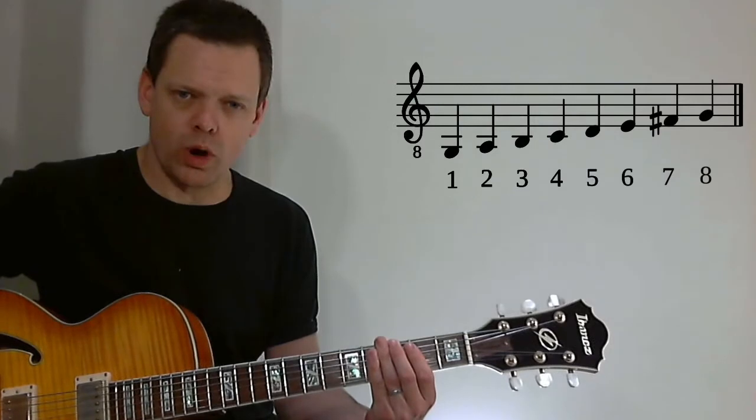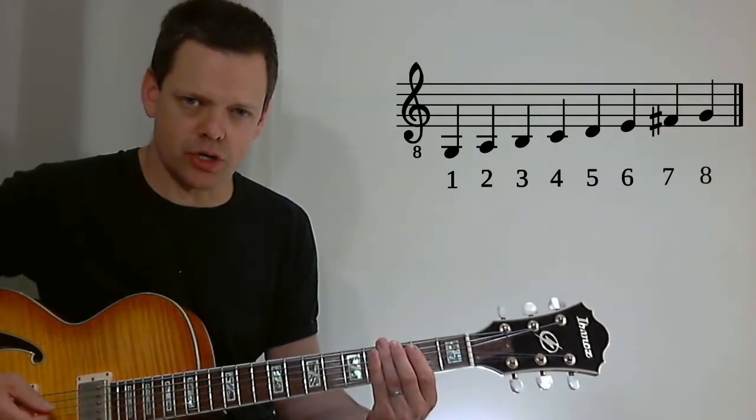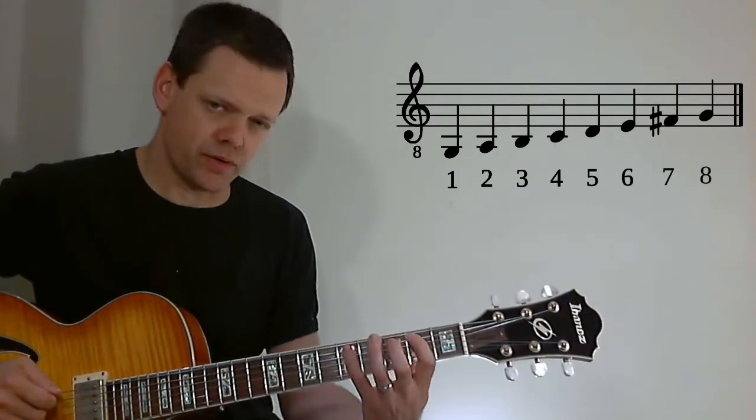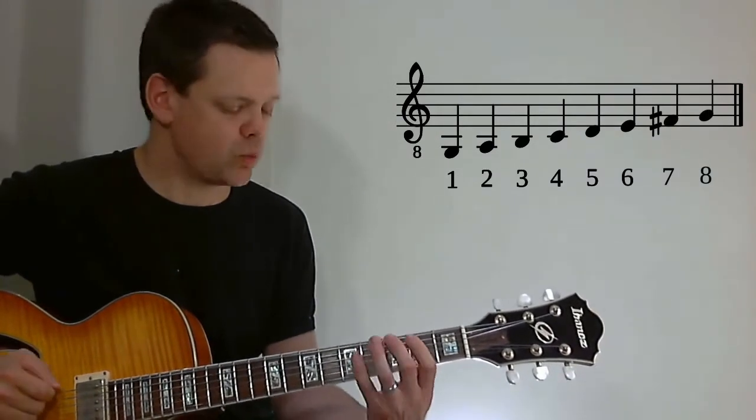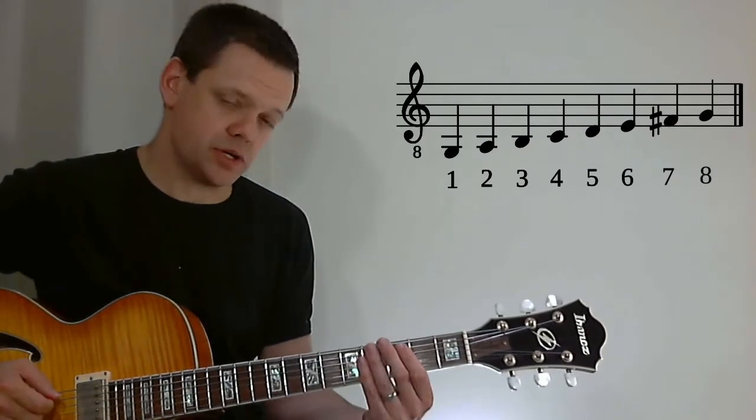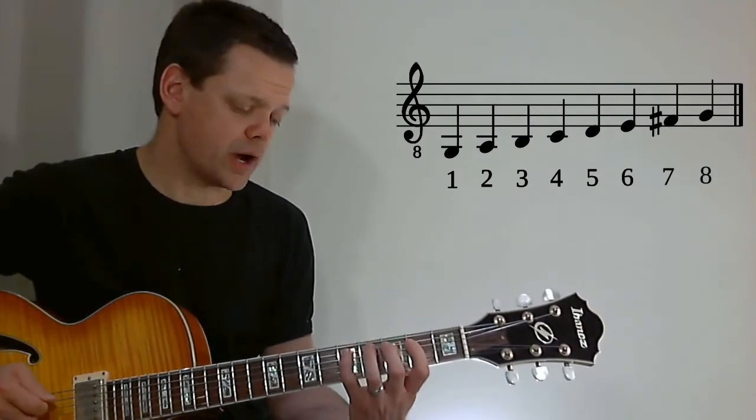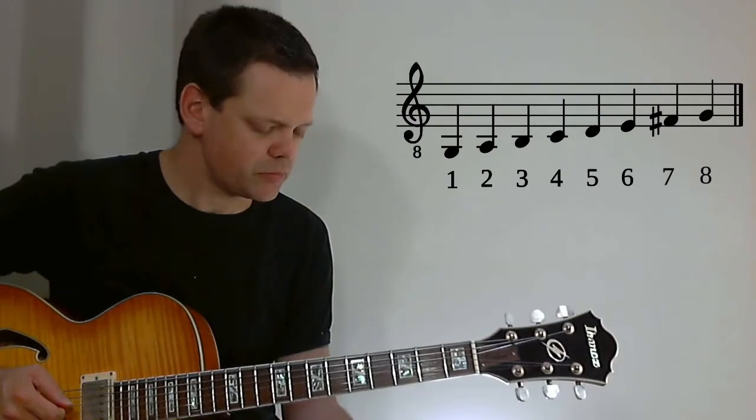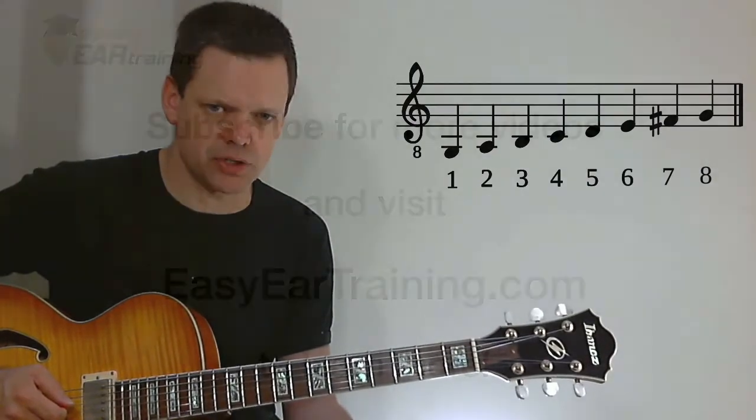So our 1 chord would have the root note of G. Our 4 chord - 1, 2, 3, 4 - has the root note of C. Our 5 chord - 1, 2, 3, 4, 5 - has the root note of D. Our 6 chord - 1, 2, 3, 4, 5, 6 - has the root note of E. So that's our basic idea of our major scale.